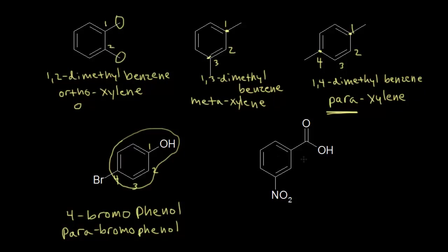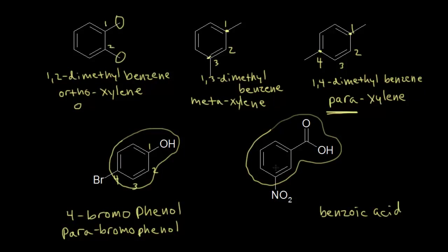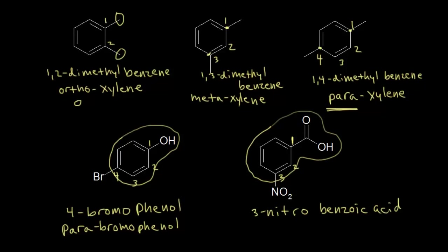For this next disubstituted benzene ring, I can see it contains benzoic acid, which we memorized. So the parent name is benzoic acid, making that carbon 1. The substituent comes off carbon 3 and is a nitro group, so we can call this 3-nitrobenzoic acid. Or, since the relationship between the two groups is meta, we can call it meta-nitrobenzoic acid, or m-nitrobenzoic acid. All of those are correct IUPAC names.